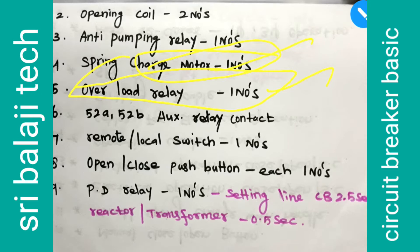Number 6 — 52A and 52B. These are the auxiliary contacts. We can use the auxiliary contacts and we can use the indicator to access the breaker status.